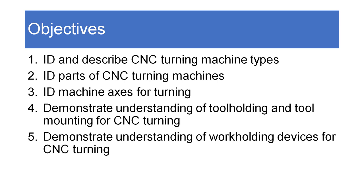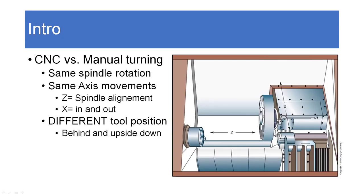Work holding devices are very similar to what you've learned on a manual lathe — in fact, most of this is very similar. On a CNC machine, the spindle rotation is exactly the same, generally rotating forward in a clockwise direction. The Z-axis aligns with that rotation; the X-axis is typically in and out. We don't often use a Y-axis unless we're using live tooling for milling operations. What is very different is the tool is typically positioned behind and upside down relative to the work, because placing it on the opposite side allows a right-hand tool to still operate like a right-hand tool.